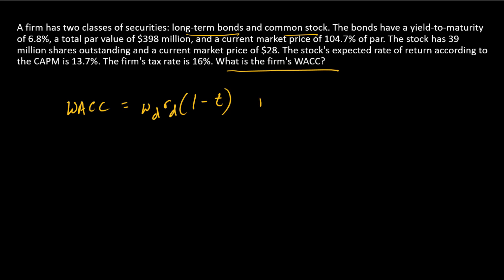So that's the debt component. Now, going to the equity component, it's going to look similar. WE, which is the weight of the equity, times RE, which is the cost of equity. So first things first, let's deal with the weights.